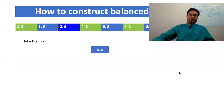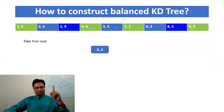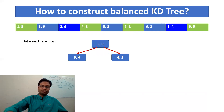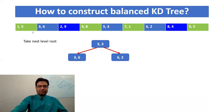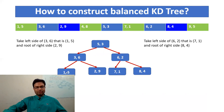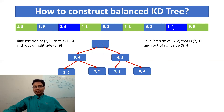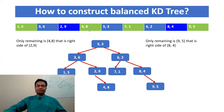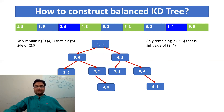Now let's see how the full tree is constructed. Five-three is the root. Then three-six is the left child and six-two is the right child of the root. One-five is the left child of three-six, and two-nine is the right child of three-six. Four-eight is the child of two-nine. Seven-one is the left child of six-two, and eight-four is the right child. Nine-five is the right child of eight-four. This is the balanced 2D KD-tree.